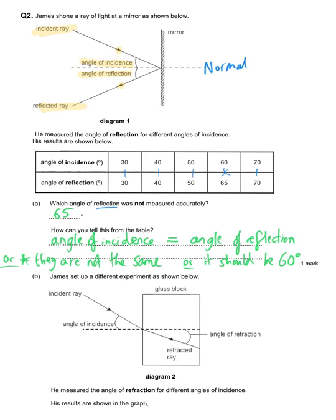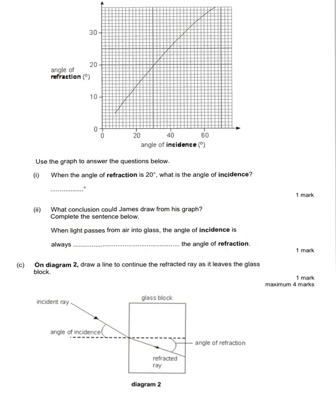The same student goes on to do another experiment with light — this time shining the incident ray onto a glass block. The path changes: it moves into the block, hits the block, and then bends slightly. The dashed normal line is useful because we can talk about the light bending towards the normal. He is measuring the angle of refraction for different angles of incidence, and the results are on the next page. His graph has the different angles of incidence along the x-axis and the different angles of refraction on the y-axis — the bending of light when it moves from one substance to another is called refraction.